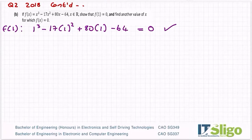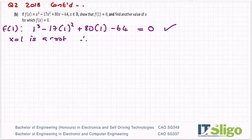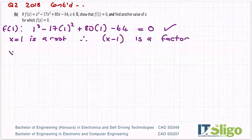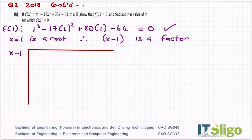Now we need to find another value of x for which f(x) is equal to zero. You have a few choices — one is long division. So f(1) means x equals one is a root, therefore x minus one is a factor. It is always the factor that we long divide in. And we will long divide it into x cubed minus 17x squared plus 80x minus 64.